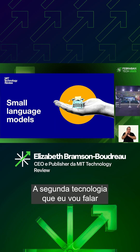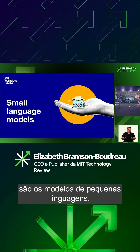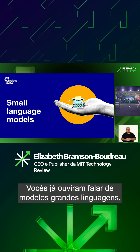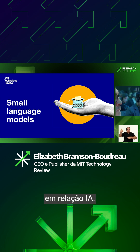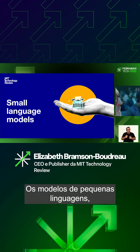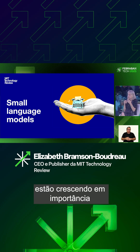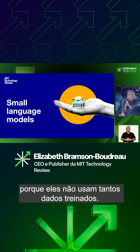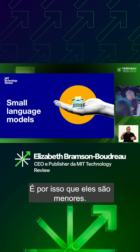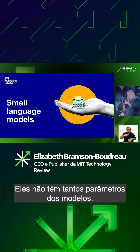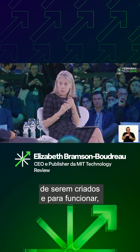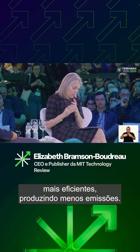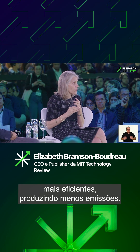The second technology I'm going to talk about is small language models. You've heard about large language models — that's most of what we're talking about with AI. Small language models are growing in importance. They do not use as much training data — that's why they're small. They don't use as many parameters in the models. Because they use fewer parameters and they're smaller, they're less expensive to create and to run. They're more efficient and they produce fewer emissions.